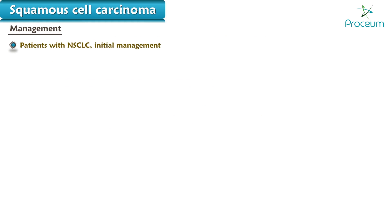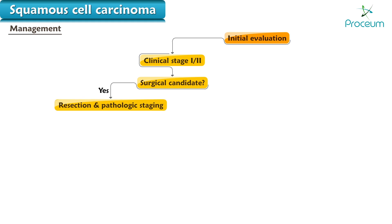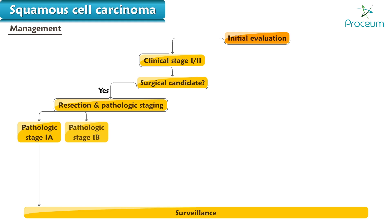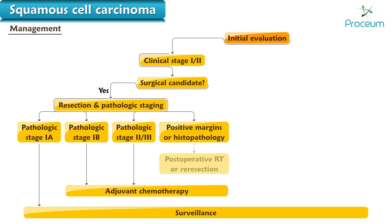For patients with non-small cell lung cancer, the initial management is largely determined by the stage of the disease. Patients diagnosed in clinical stage 1 or 2 should be assessed as surgical candidates. Those who are surgical candidates should undergo resection and pathologic staging. Pathologic stage 1a requires only surveillance. Pathological stages 1b, 2, and 3 require adjuvant chemotherapy. If there are positive margins or histopathology significant for recurrence, post-operative radiotherapy or re-resection followed by adjuvant chemotherapy and surveillance should be done.